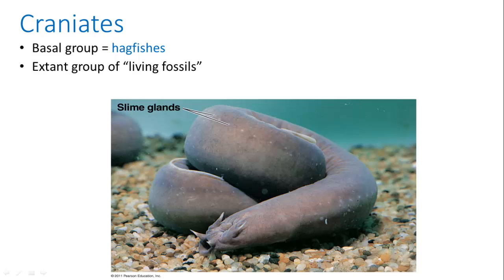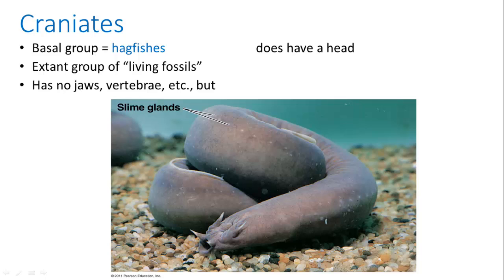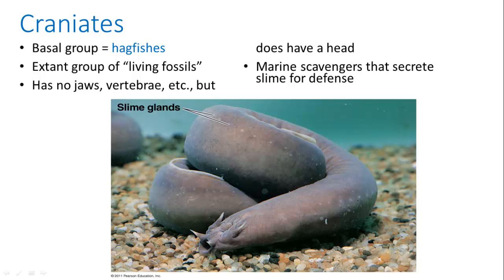Our craniates include the basal group called hagfishes. They don't have any jaws or vertebrae, but they do have a head. They are marine scavengers that secrete slime for defense. You'll find these on the ocean floor looking for dead things — when a whale dies and falls to the ocean floor, you'll see a bunch of these showing up immediately to consume the rotting whale.